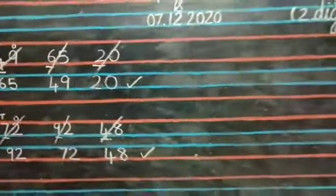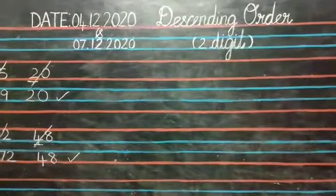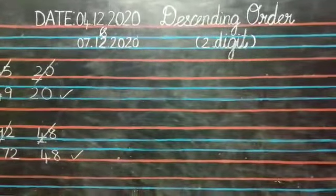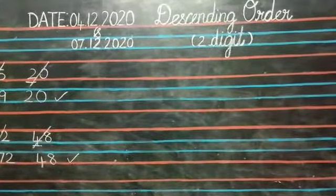Children, hope you all understood how to write descending order using two digit numbers. Children, open your number work notebook. Write the answers correctly. Thank you, children.